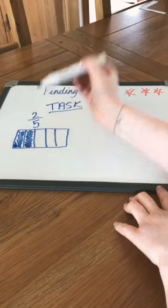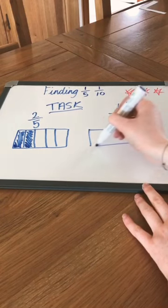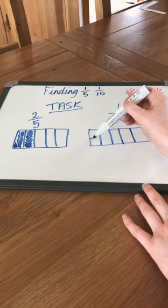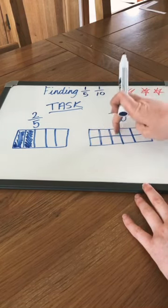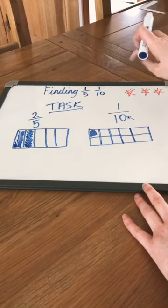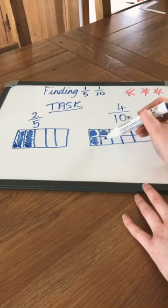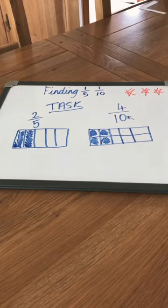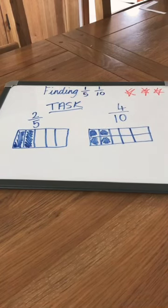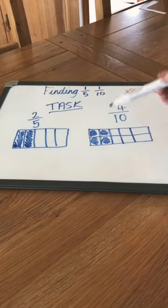You also want to show tenths. Get your rectangle and split it into ten parts — five down one side and a line across the middle gives you ten parts. The number at the bottom is ten, so we want one shaded. Now, what if I asked for four tenths? We need to shade four in. Can you see any similarities between two fifths and four tenths? You might have noticed that one fifth is equal to two tenths, so when we shade in two fifths we have four tenths there.